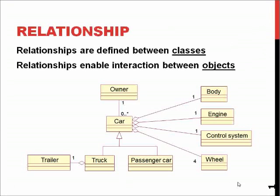First of all, if we consider what a relationship is — why there are lines between different classes — it's simply an indication that these two classes have some sort of connection to each other.